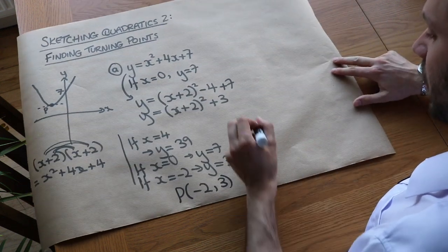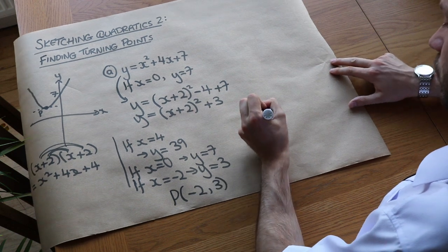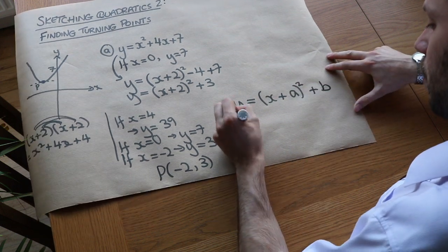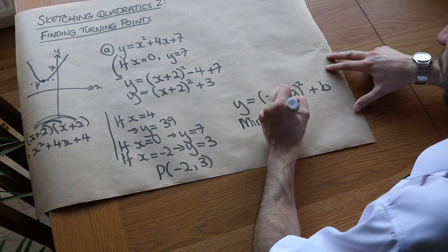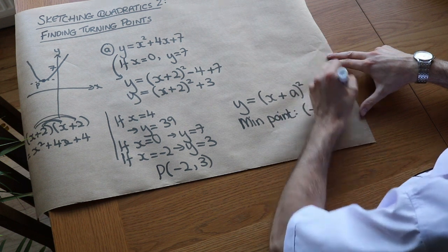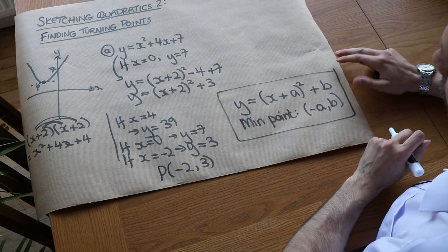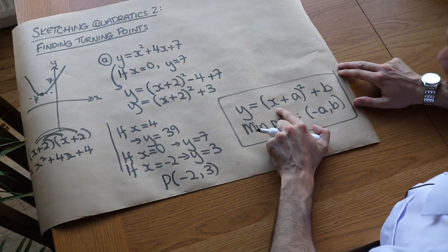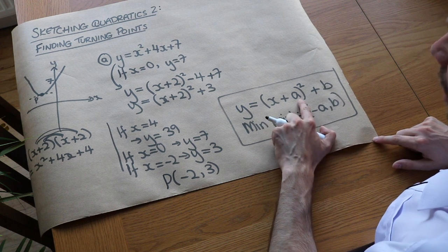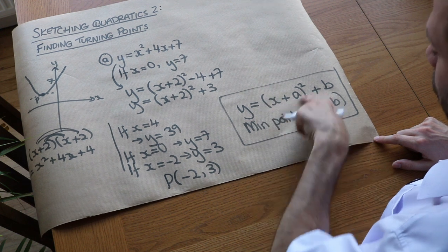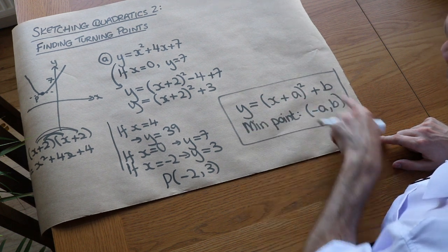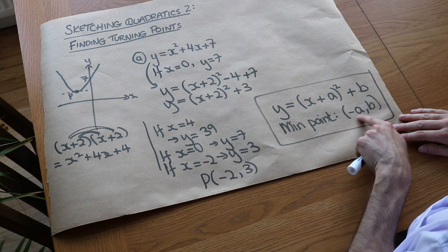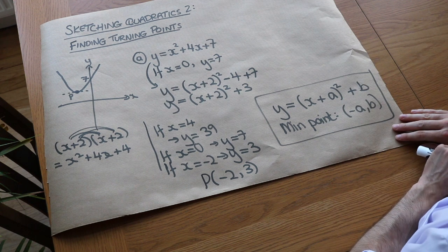In general, if you've completed the square to get y equals (x + a)² + b, then the minimum turning point is (−a, b). To minimise the squared term, we make x equal to minus a so that the bracket becomes zero, giving y equals b. Basically, negate the number next to x inside the bracket for the x-value, and use the remaining constant as the y-value of the turning point.